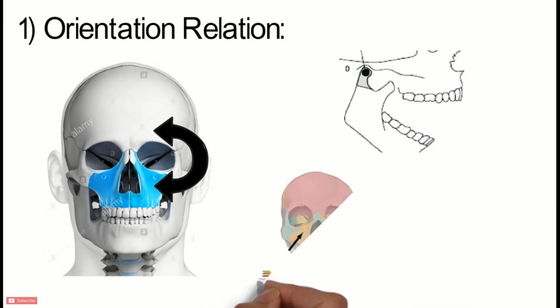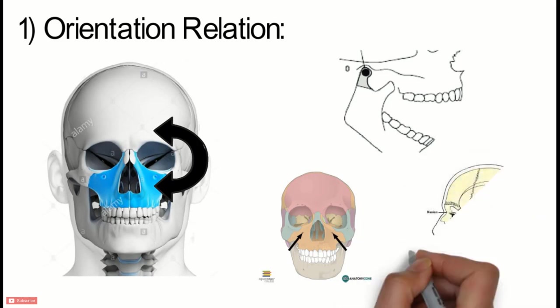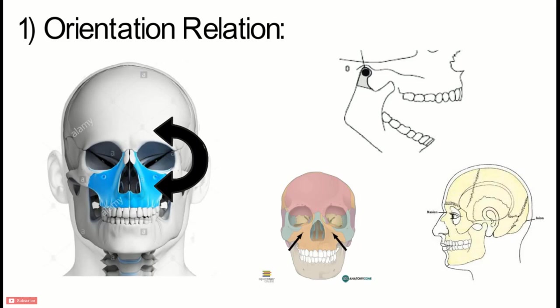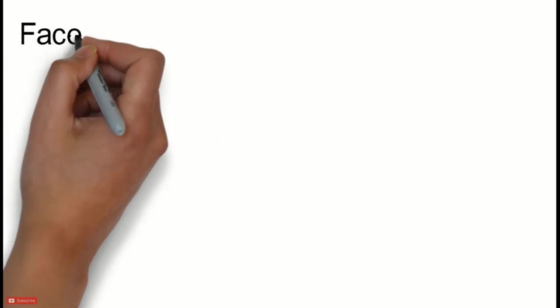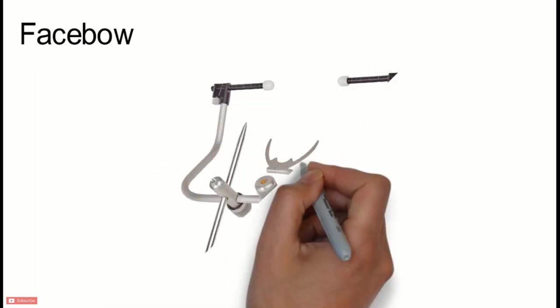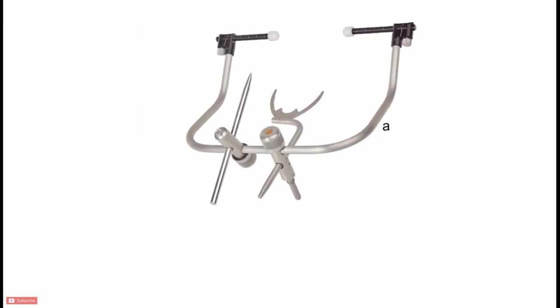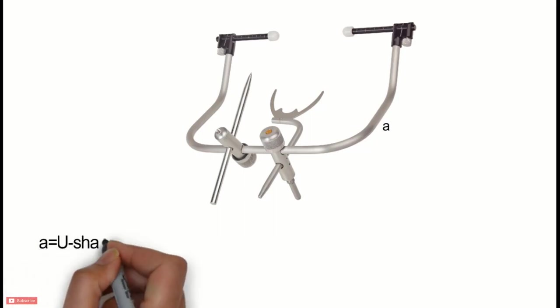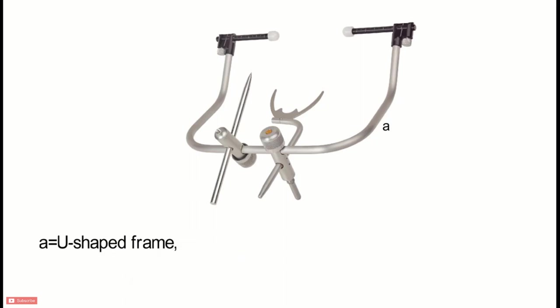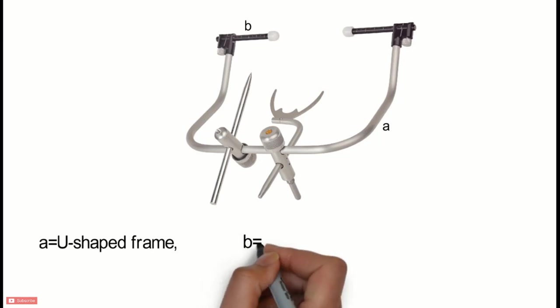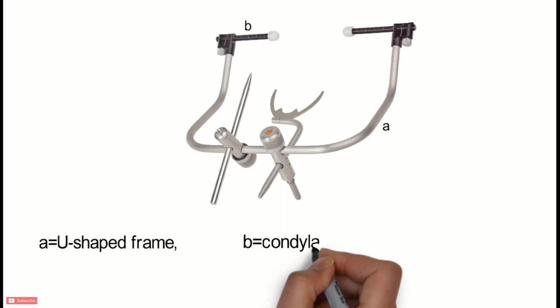The third reference point lies anteriorly in the maxilla, maybe in the form of the infraorbital notch or nasion. The instrument used to record the center of condylar rotation along with the third reference point, thereby forming a plane to record the orientation relationship of the maxilla to the cranium, is called a face bow. A face bow is made up of different parts. The first is the U-shaped metallic frame, to which all other components of the face bow are attached. It extends from one side of the face to the other. The next part is the condylar rods — two metal extensions fitted on either side of the U-shaped frame. The calibrations on either side of the condylar rod are equalized to the center of the face bow and then they are locked.